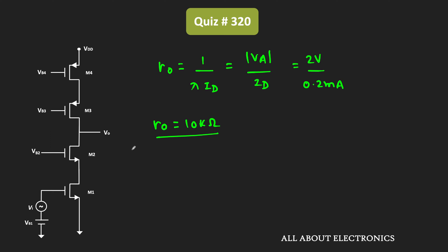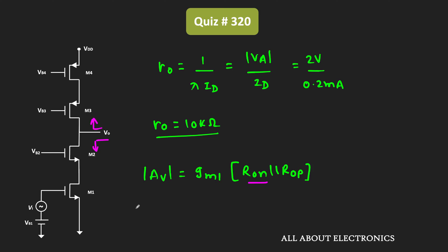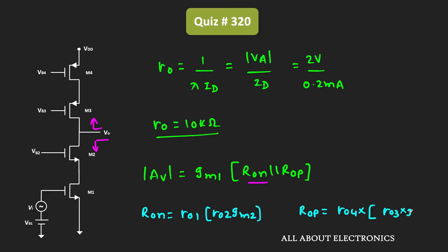Now let us find the voltage gain. For this cascode amplifier with a cascode current source load, the voltage gain can be given as GM1 times (Ron in parallel with Rop), where Ron is the output resistance of the cascode amplifier and Rop is the output resistance of the cascode current source. Ron equals ro1 × ro2 × gm2, meaning the output resistance of M1 gets multiplied by the intrinsic gain of M2. Similarly, Rop equals ro4 × ro3 × gm3.